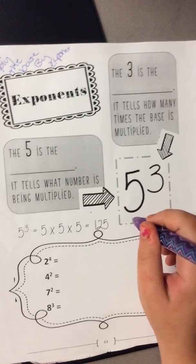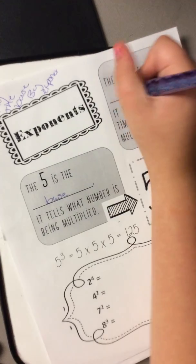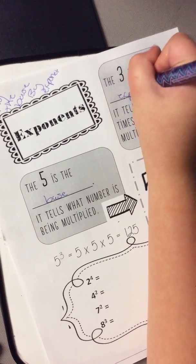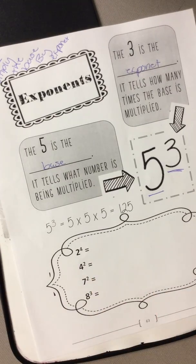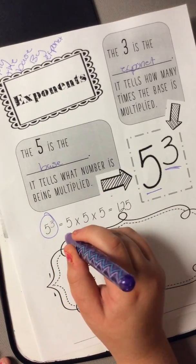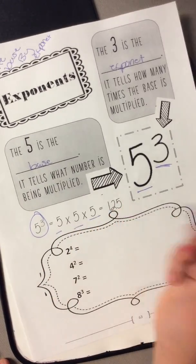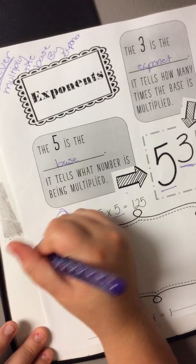So for this example, the base is going to be 5 and the 3 is going to be your exponents. A good example that shows you is the one that's up here. What you would do is 5 times 5 times 5. You would never do 5 times 3. It's always just wrong.